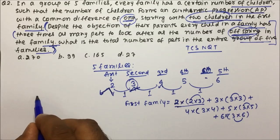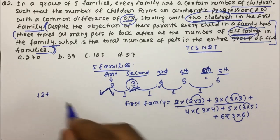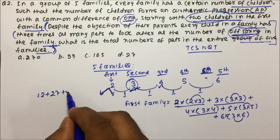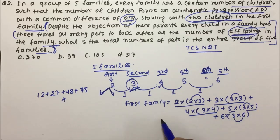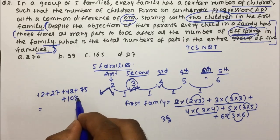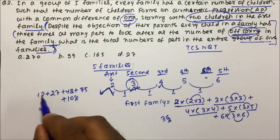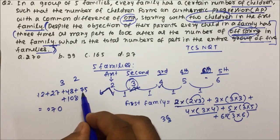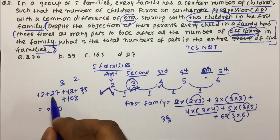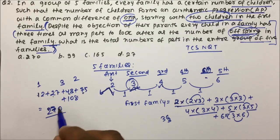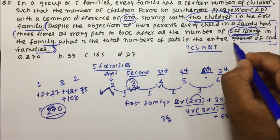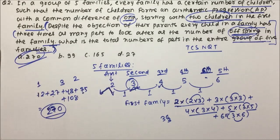Multiplying: 2×2=4, 4×3=12; then 3×3=9, 9×3=27; then 4×4=16, 16×3=48; then 5×5=25, 25×3=75; then 6×6=36, 36×3=108. Adding 12+27+48+75+108 = 270. So the total number of pets in the entire group of 5 families is 270.